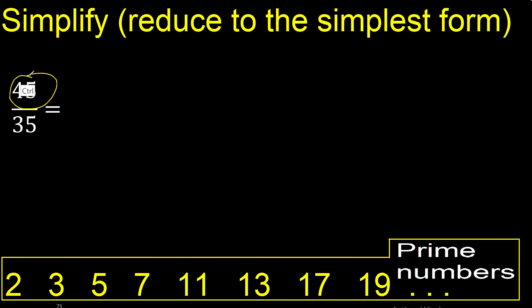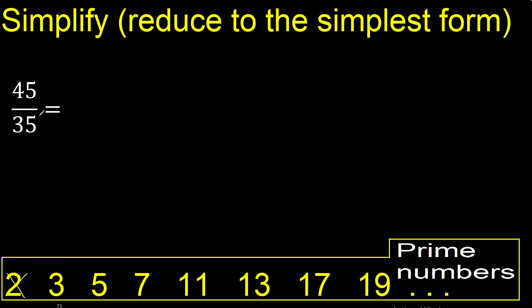Can 45 and 35 be divided by the same number? Cannot be divided by 2 because the last digit is not even. Cannot be divided by 3 because 35 cannot be divided by 3.